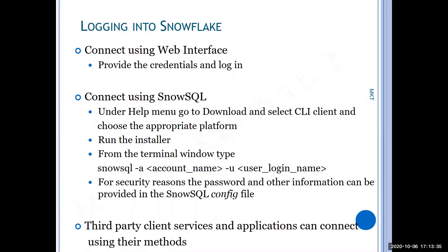Third-party client services and applications connect using their own methods — for example, the Python library has its own way to connect, and .NET has its own connection method. Whatever way you connect, you need to specify the account name and username, as these are essential. Optionally, you can also specify your warehouse, which database to connect to, and even the schema.